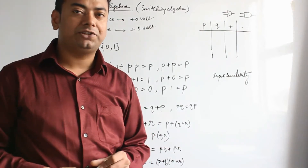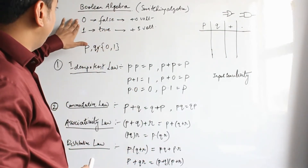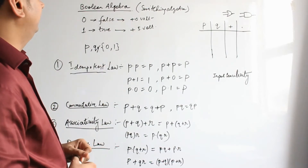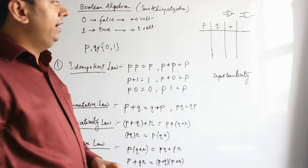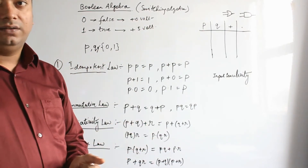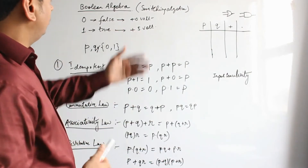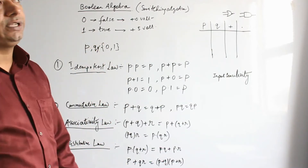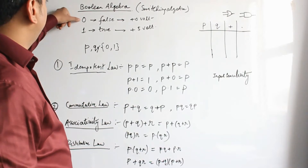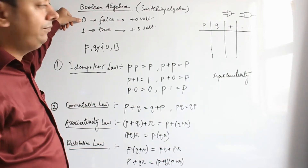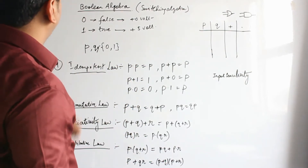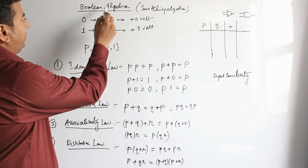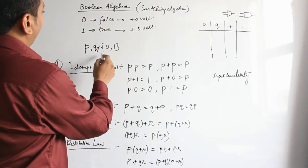In digital electronics, 0 and 1 represents voltage. In an electrical system, 0 volt (sometimes denoted as minus volt) is considered false, and we choose the numeric value 0. For plus 5 volts, we choose the value 1. So variables P, Q, and R belong to this Boolean algebra and can take the value 0 or 1.